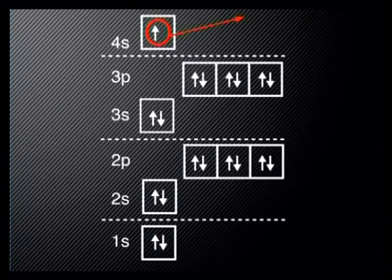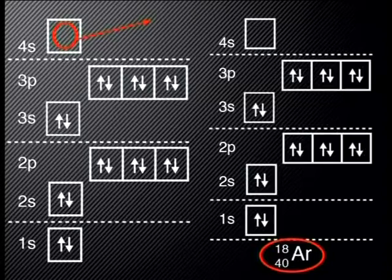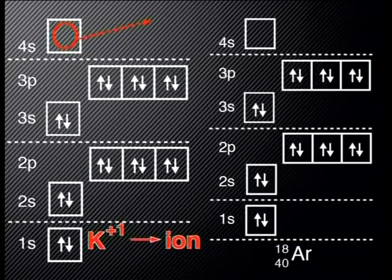When potassium gives its 1 valence electron away, it will only have 18 electrons. The atom has the nucleus of a potassium atom, but the electron distribution of argon, a noble gas, which has all three of its energy levels full. Now it has 19 protons but only 18 electrons, so it has a positive charge of plus 1. The potassium atom is no longer neutral, and so it is called an ion. Here is the Lewis dot diagram for potassium. Potassium has 1 valence electron and a valency of 1.